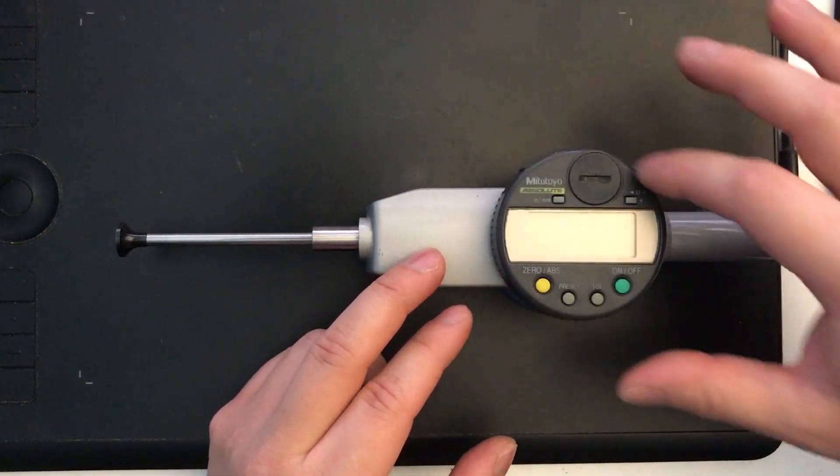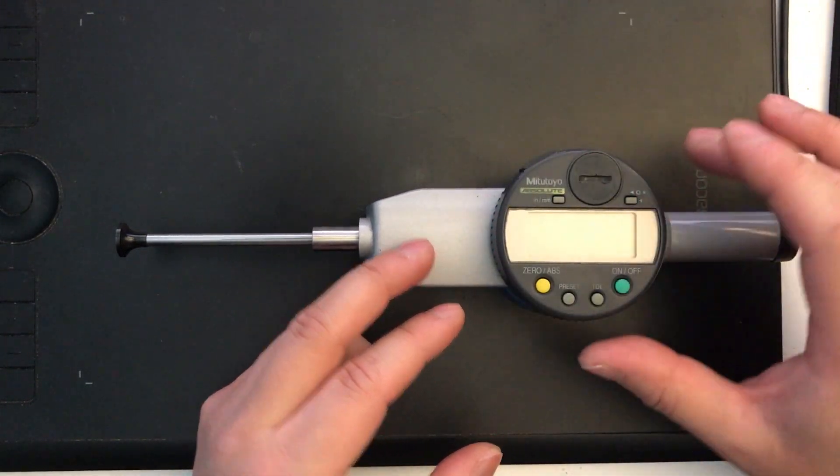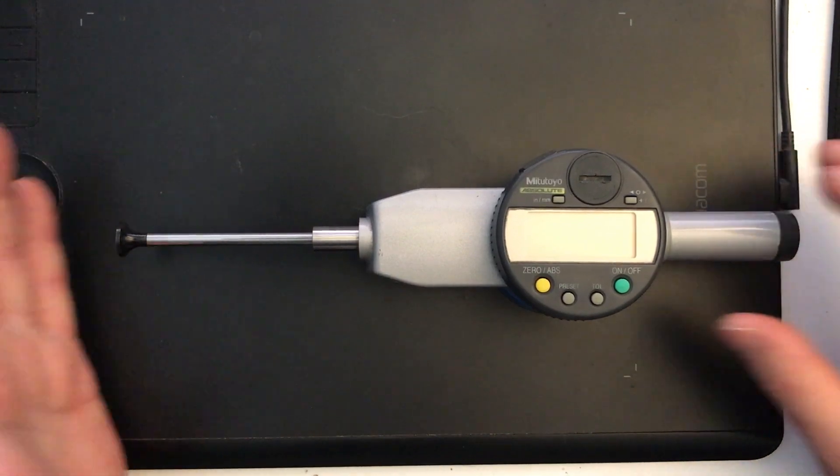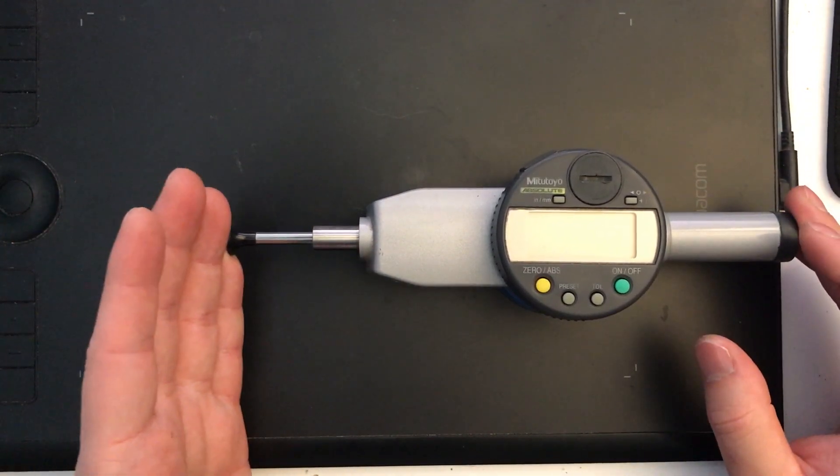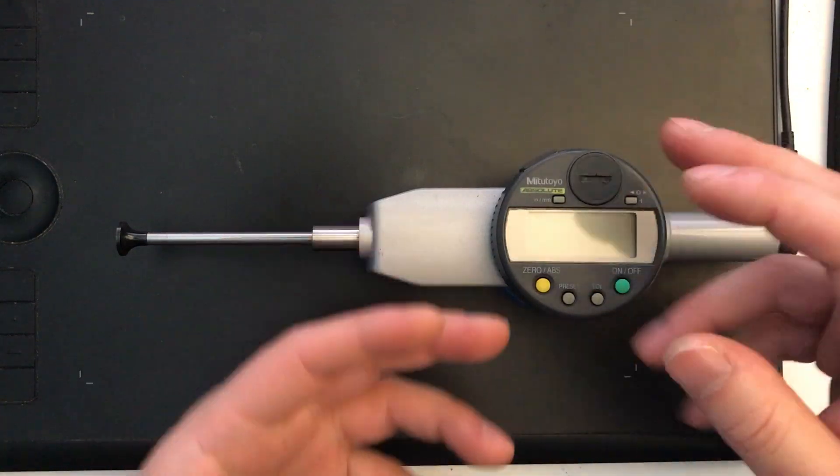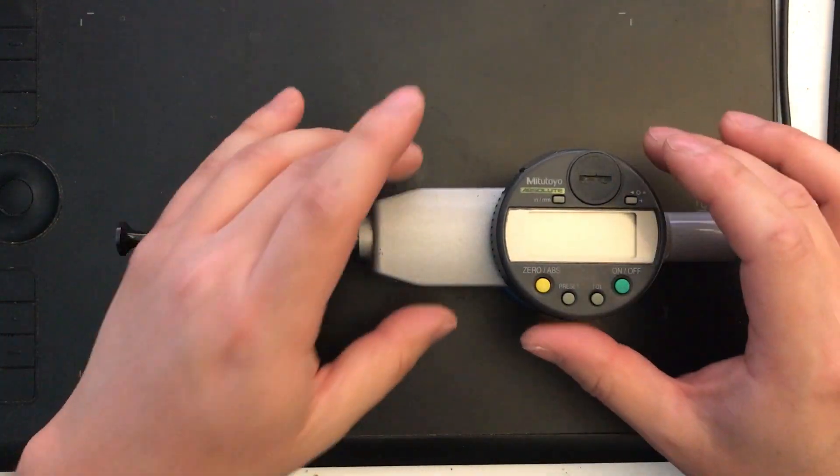This head unit here was actually used on a number of different Mitutoyo indicators, some with less length in terms of travel, others in a more conventional form factor, maybe an inch or half an inch of travel.